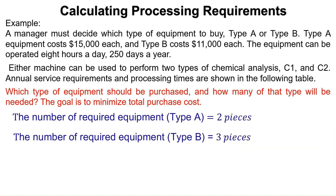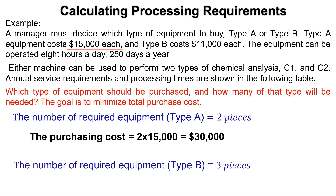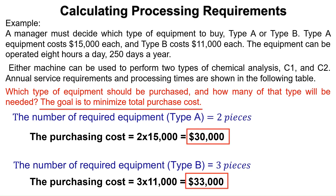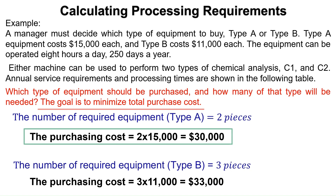After calculating the required equipment of each type, compute the corresponding purchasing cost by multiplying the number of pieces by the cost of one piece. For Type A, the purchasing cost equals 2 times $15,000 equals $30,000. For Type B, the purchasing cost equals 3 times $11,000 equals $33,000. As the goal is to minimize total purchasing cost, two pieces of Type A would have sufficient capacity to handle the load at a lower cost than three pieces of Type B.